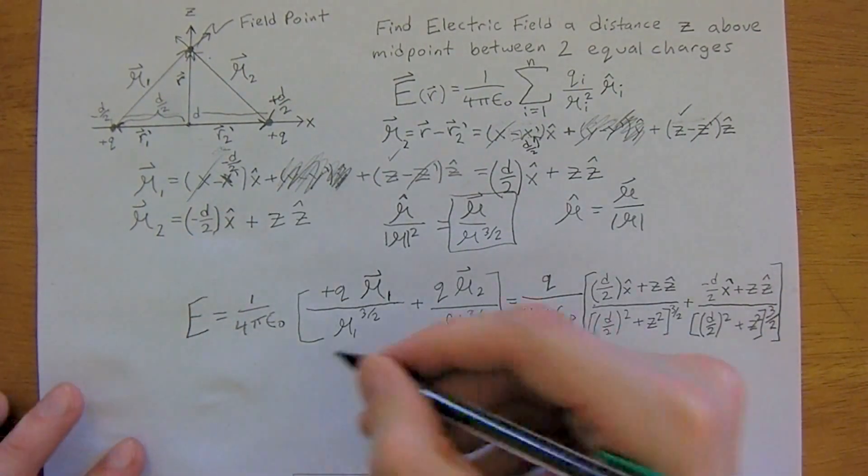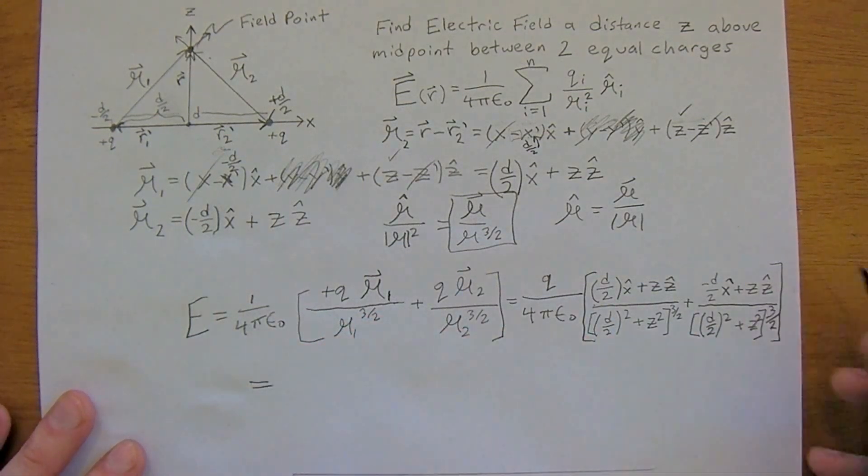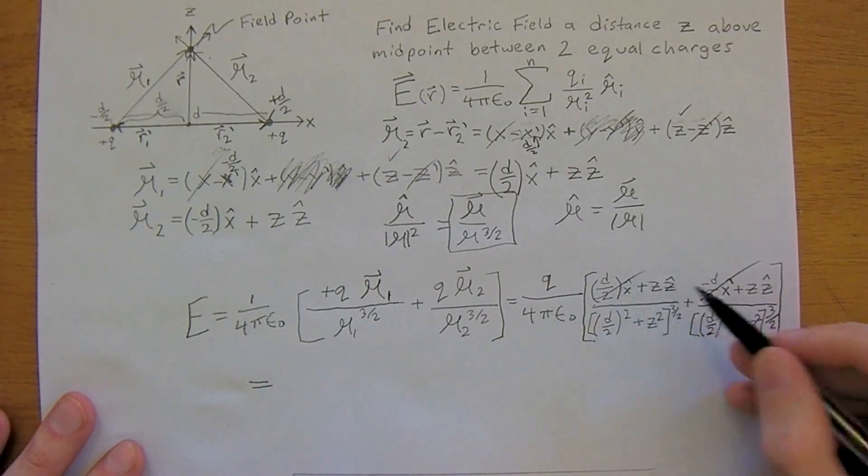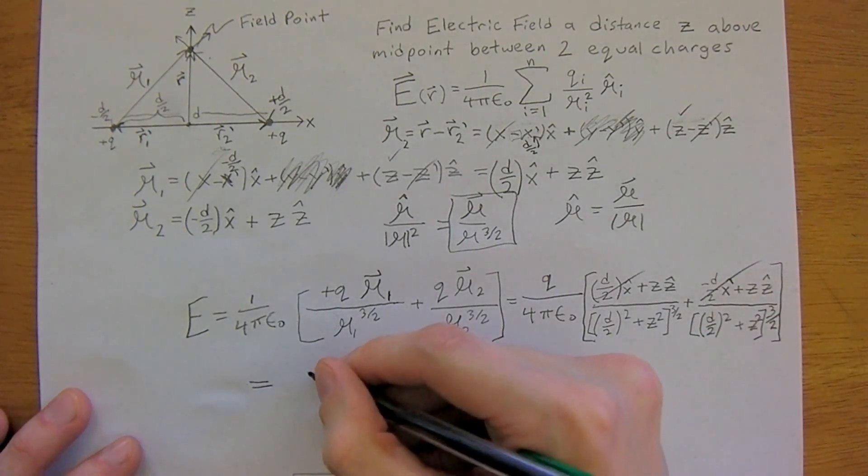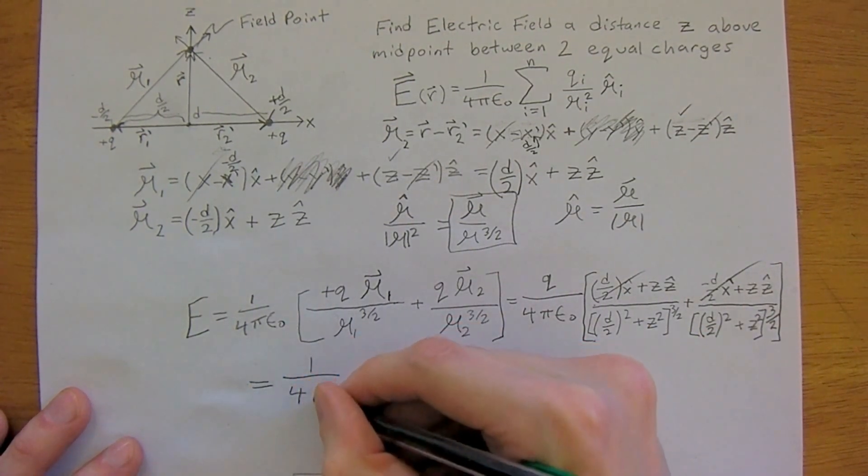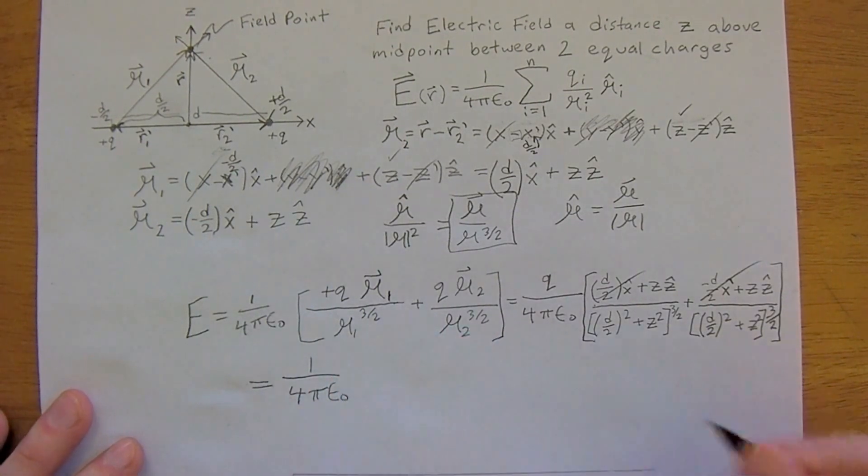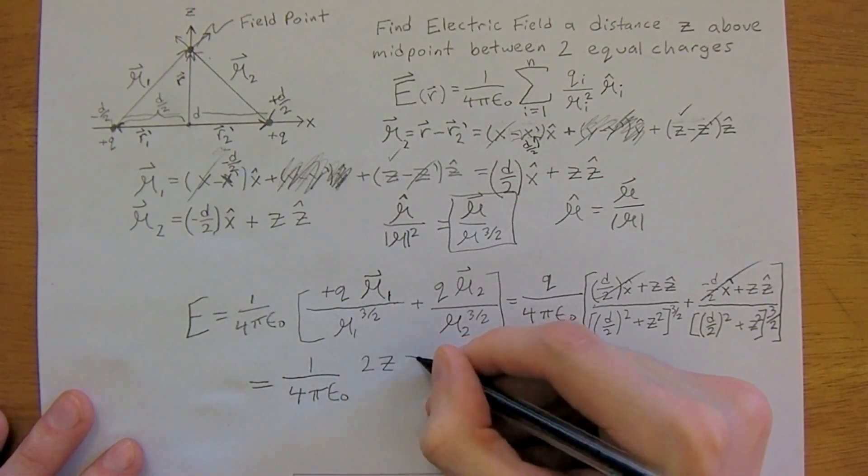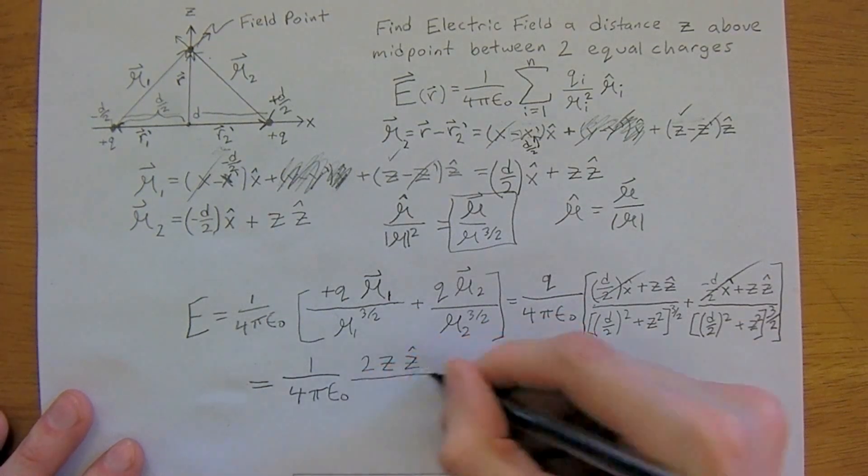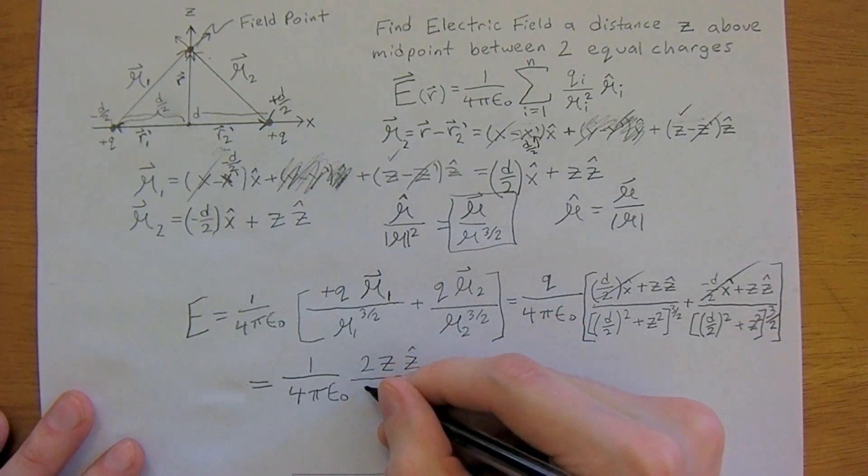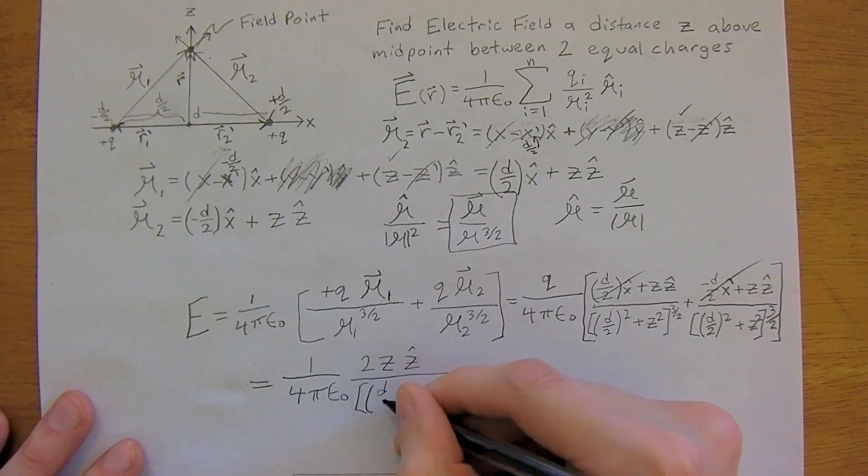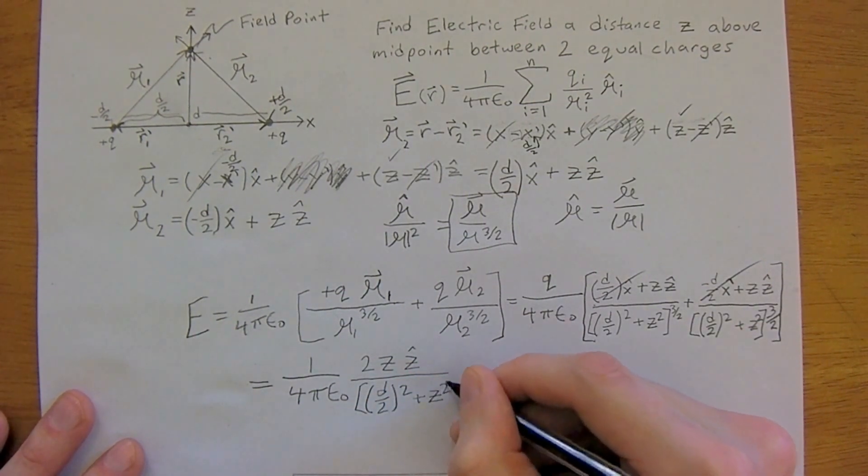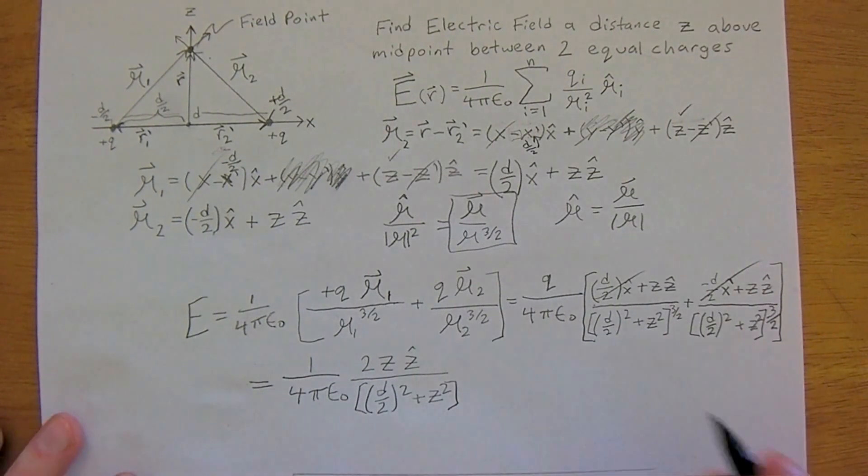So we're going to add these up. And we're going to see that this d over 2 will cancel here, a positive and a negative. So this leaves us with 1 over 4 pi epsilon 0 times 2 z z hat divided by d over 2 squared plus z squared. That is your final answer.